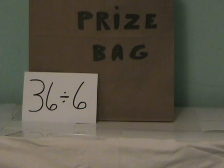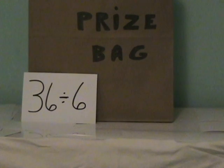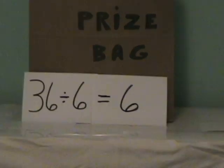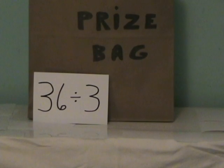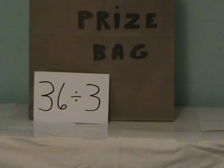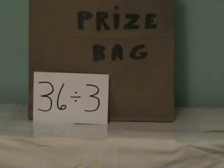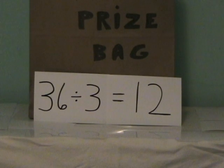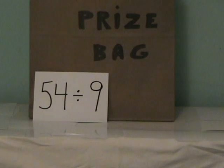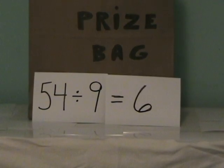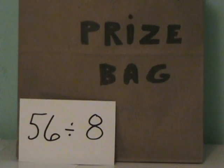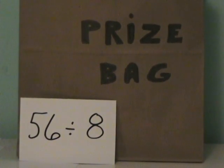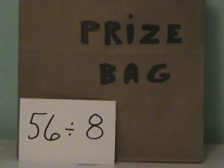Next problem: 36 divided by 6. That's right — 36 divided by 6 is 6. Next problem: 36 divided by 3. That's right — 36 divided by 3 is 12. Nice job. 54 divided by 9 is 6. 56 divided by 8 — remember, it's just multiplication backwards. 7 times 8 is 56, so 56 divided by 8 is 7.